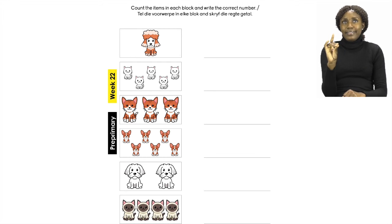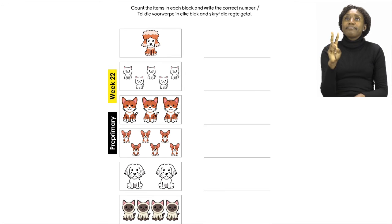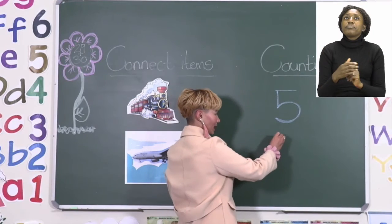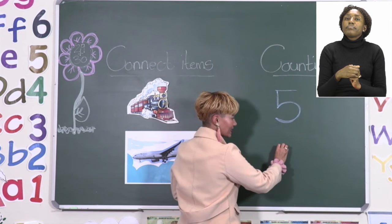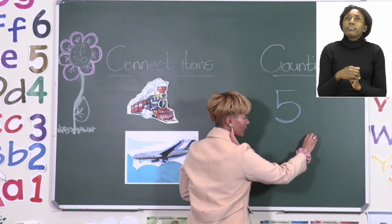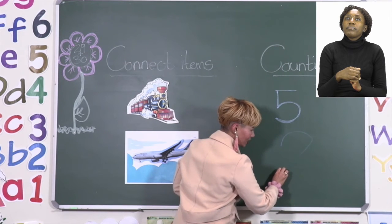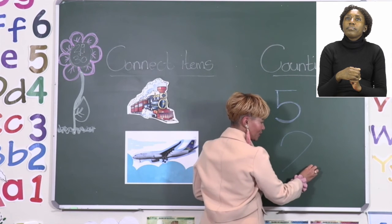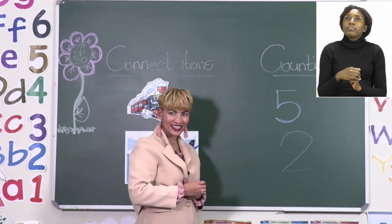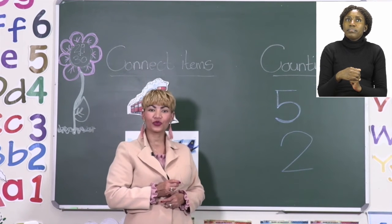On the line next to the block you have to write the number two. How do you write the number two? You put your pencil down and start with a little circle, then you come down, stop, and then you make another line. There we have the number two.